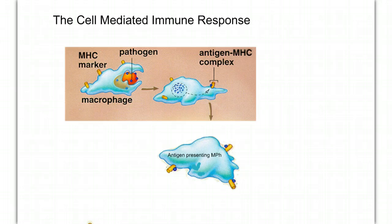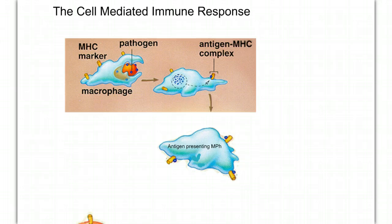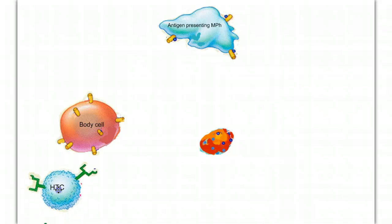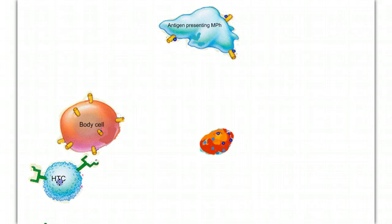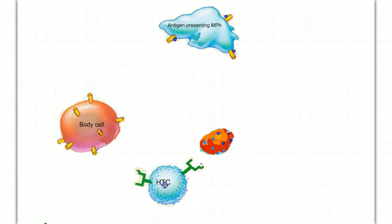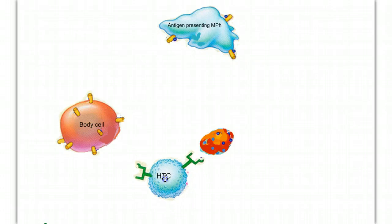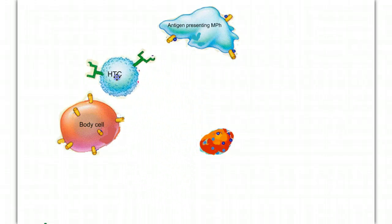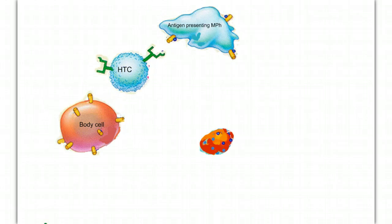This creation of the antigen-MHC complex is important because helper T-cells ignore MHC, as we would expect. But they also ignore antigens. So a helper T-cell would go right past the pathogen and ignore it, not recognize it. But when it sees the MHC-antigen complex, it pays attention — this draws its attention.